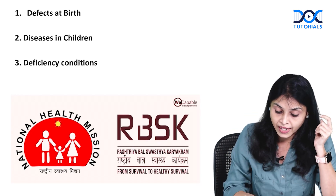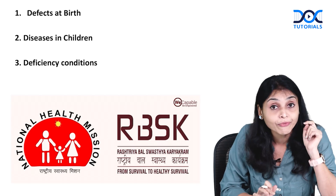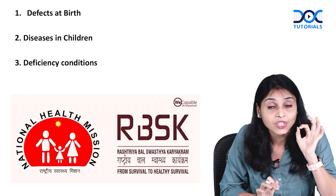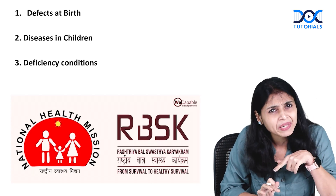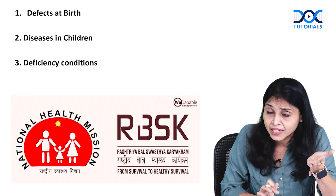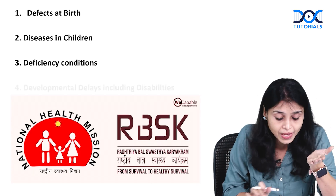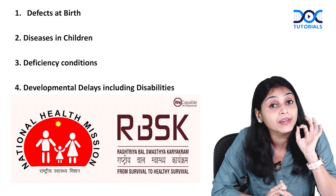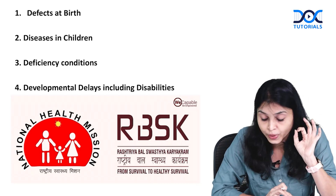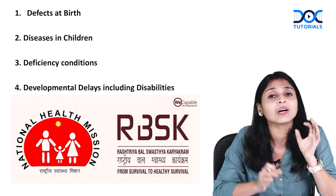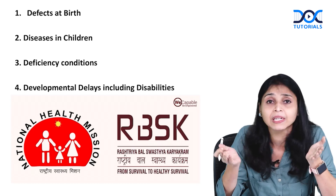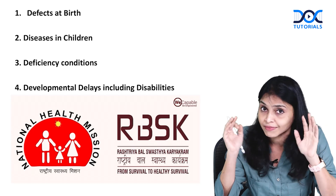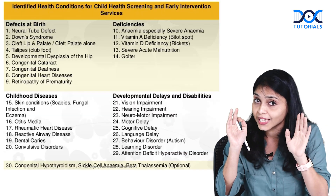Third D is deficiency conditions in children like vitamin A deficiency, vitamin D deficiency, and anemia. Fourth D is developmental delays including disability, like visual impairment, hearing impairment, and ADHD.